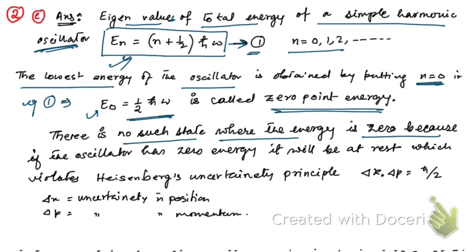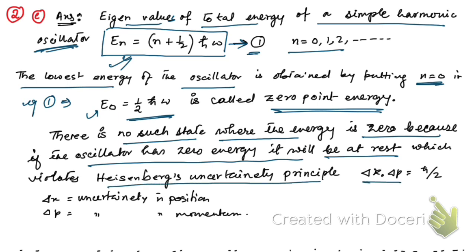Zero point energy does not mean the energy is zero. If the oscillator had zero energy it would be at rest, meaning no uncertainty in position or momentum, which would violate Heisenberg's uncertainty principle. In quantum mechanics you cannot simultaneously know the exact position and momentum, so there must always be some uncertainty: Δx·Δp ≥ ℏ/2.